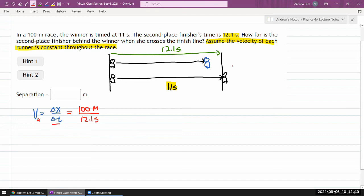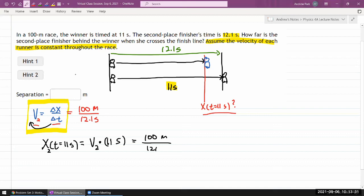The question is, where is she? X at time equals 11 seconds. We know the velocity, so we can make use of this relationship again, except for a different time. The position of the second place finisher at time t equals 11 seconds will be the velocity of the second place finisher times the duration of time, 11 seconds. So, 100 meters divided by 12.1 seconds times 11 seconds. I don't think I can do that in my head, so let me use my calculator.